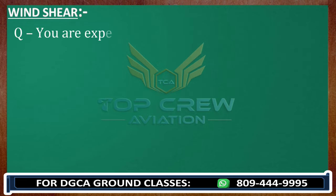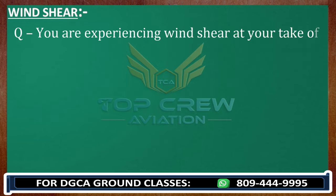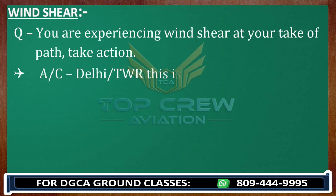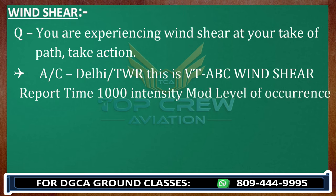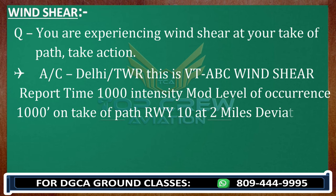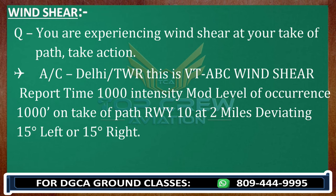For wind shear on the takeoff path, the call is similar — just replace the approach-related words. 'Delhi Tower, Victor Tango Foxtrot Bravo Charlie. Wind shear. Report time 1-0-0-0. Intensity moderate. Level of occurrence 1,000 feet. On takeoff path runway 1-0 at 2 miles. Deviating 15 degrees left or 15 degrees right.' We never depart if we are already aware of wind shear activity.